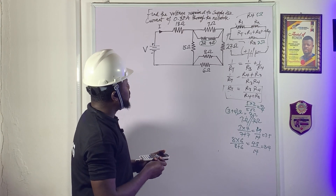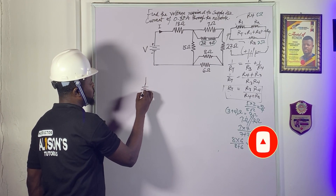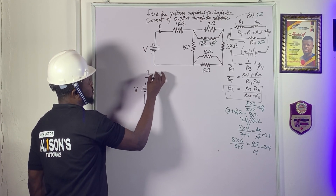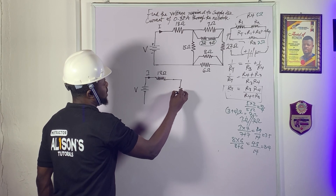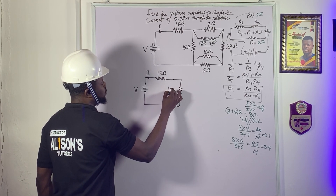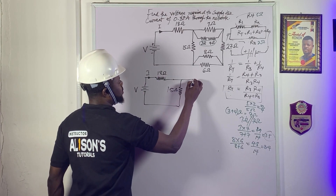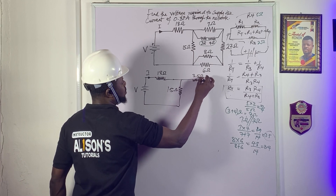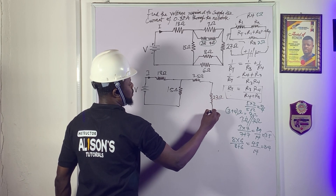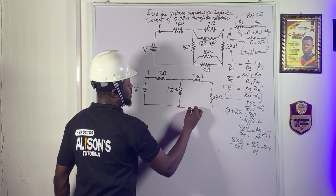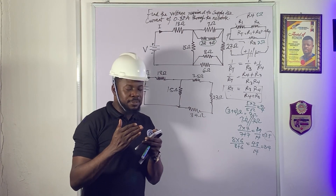Let's redraw the circuit — we'll draw it maybe three times and then we're done. In the redrawn circuit we have the source voltage, a current, the 18-ohm resistor, the 15-ohm resistor (unchanged), the 3.5-ohm equivalent we just calculated, the 27-ohm resistor, and the 3.4-ohm equivalent.